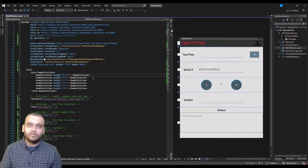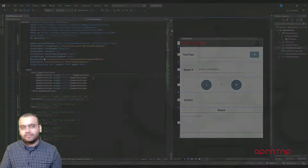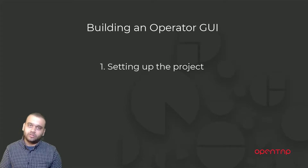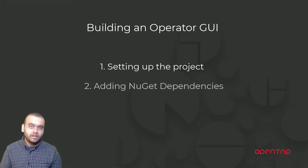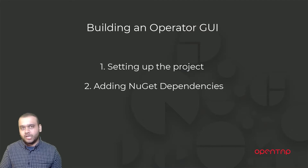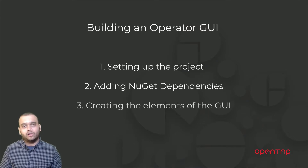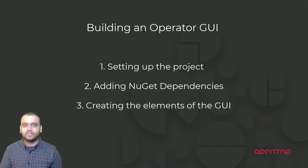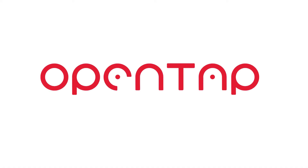In the next video, we will look at how to connect these fields and buttons to the OpenTab engine using the OpenTab SDK. So to recap: in this video, we first set up a WPF based application using Visual Studio. We then brought in three NuGet packages as our dependencies — these help us talk to the OpenTab engine as well as making the GUI prettier with some colors and styles. We then laid out all the basic elements of the GUI using a grid container. Thank you for watching, and stay tuned to the next video where we will be adding functionality to these GUI elements.